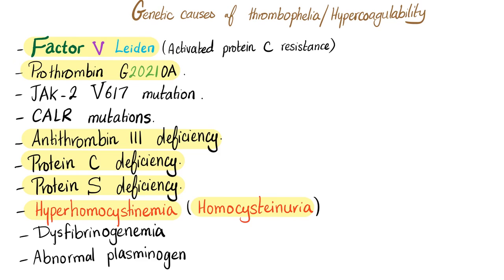Genetic causes of thrombophilia and hypercoagulability include: Factor V Leiden (most common, also known as activated protein C resistance), prothrombin G20210A mutation, JAK2 V617F mutation, CALR mutations, antithrombin 3 deficiency, protein C deficiency, protein S deficiency, hyperhomocysteinemia, homocystinuria, dysfibrinogenemia, and abnormal plasminogen.